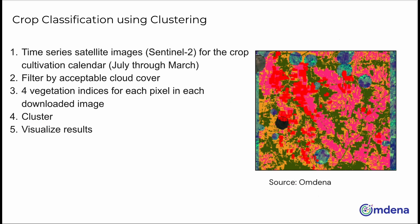The next modeling problem, classifying chili crops, was approached using a clustering algorithm based on time series data on four relevant vegetation indices. The results were then visualized. This model can be used by applying it to the areas that our field boundary delineation model predicted as farms, to detect the ones that are growing chili.